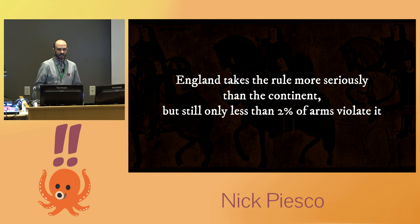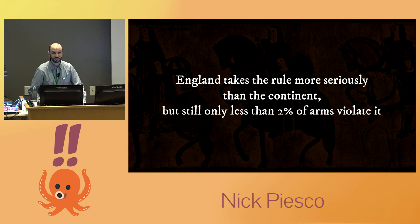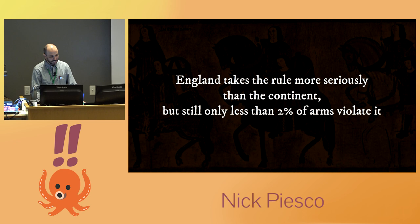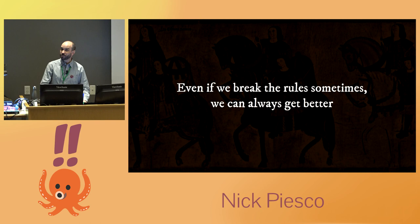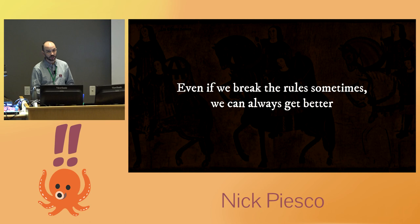England does take the rule of tincture a little bit more seriously than the continent — it's broken sometimes, but not very often. Only less than 2% of arms are violated. Scholars have studied tens of thousands of arms and found only 2% violated. For something that really was not codified until we were a couple hundred years into it, it's about as hard and fast a rule as you can put together. So even if we do break the rule sometimes, we can always get better. When it comes to accessibility and inclusive design, incremental improvements are still improvements. We just need to set a high standard for ourselves and keep working toward it, so we can make the web a better place for everybody. Thanks.